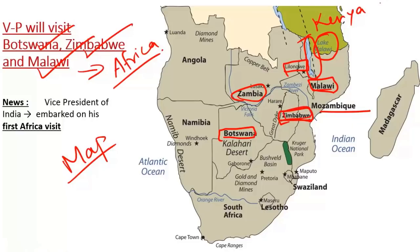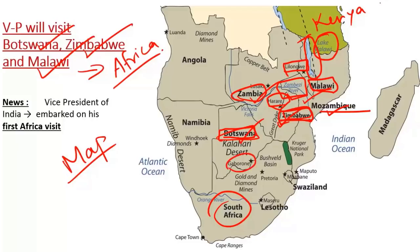Zimbabwe's capital is Harare, and it is bordered by four countries: Mozambique, Zambia, Botswana, and South Africa. The Zambezi River separates Mozambique and Zimbabwe. Botswana's capital is Gaborone, and an important feature is the Kalahari Desert located within the country. Victoria Falls lies on the Zambezi River across the countries of Zambia and Zimbabwe.